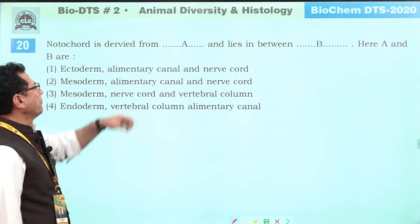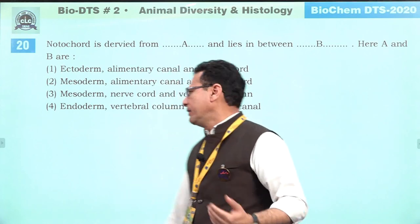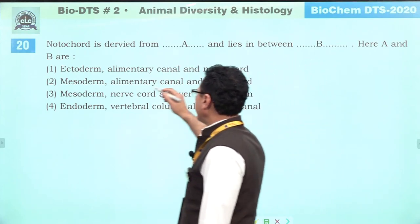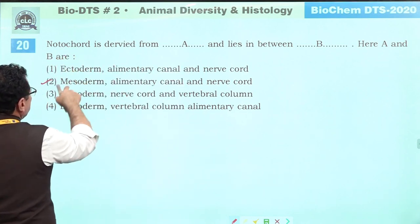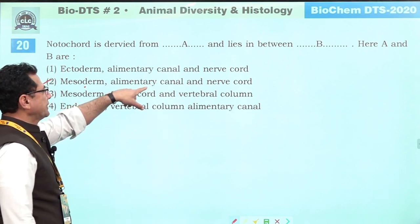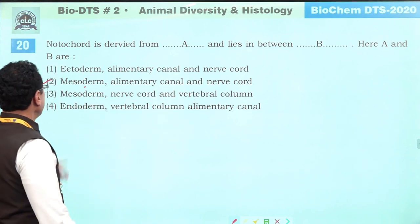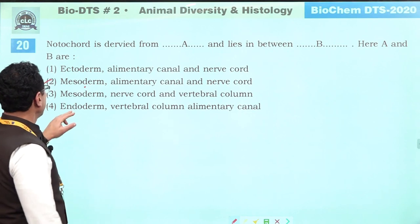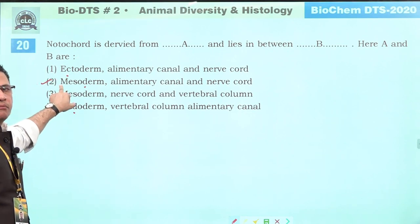Notochord is derived from mesoderm. Notochord is a mesodermally derived structure found between the alimentary canal and nerve cord. It is not derived from ectoderm or endoderm, and it is not between the nerve cord and vertebral column. It is derived from mesoderm.